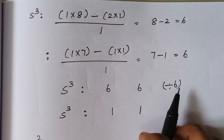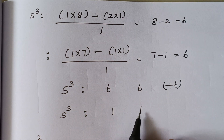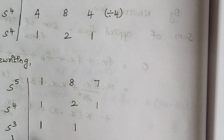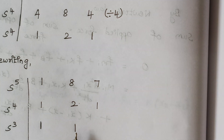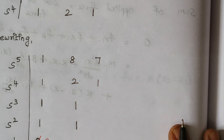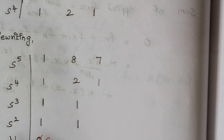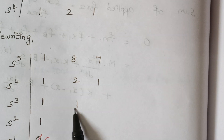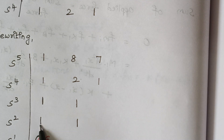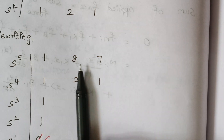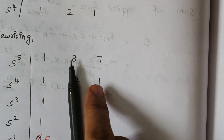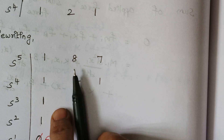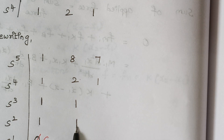Dividing the S³ row by 6, we get 1 and 1. So the S³ row in our Routh array is 1 and 1. Next, we find S²: (1×2 − 1×1) divided by 1 equals 2 minus 1 divided by 1, which is 1. For the second element: (1×1 − 0×1) divided by 1 equals 1. So the S² row has elements 1 and 1.